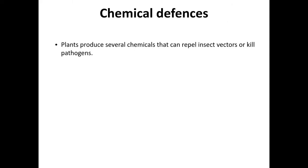There are also chemical defences that plants use to repel insects or kill pathogens. They've got tannins, which create a bitter taste — for example, when you eat salad leaves that are a bit bitter, that's because of tannins. This is the one that's more popular on mark schemes, though very rarely have I seen questions about chemical defences in plants, so just be aware of these without going into too much detail.